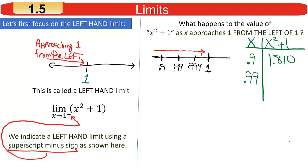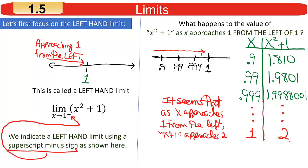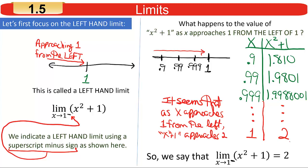If you plug in 0.99, your calculator is useful here — you'll get about 1.9801. If you put in 0.999, square it and add 1, you'll get about 1.9988001. It's easy to see that those values are getting closer and closer to the number 2 as x gets closer and closer to 1 from the left. When that happens, we say the left-hand limit of that expression is equal to 2.